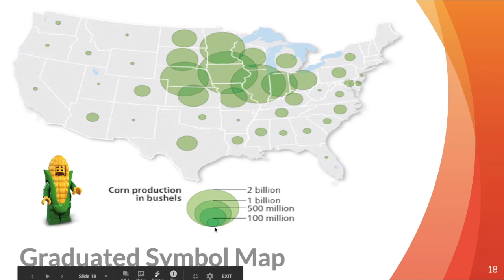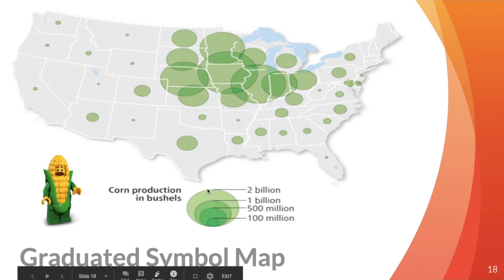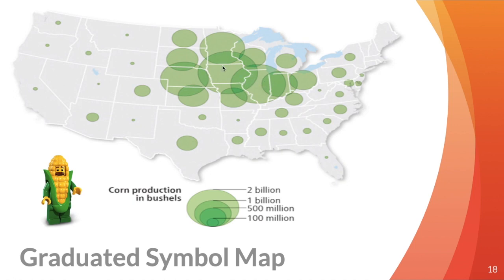The fourth map is called a graduated symbol map. It takes a symbol — it doesn't have to be a circle — and shows how that symbol is graduated, or enlarged, as corn production increases in that area. Illinois and Iowa have these giant symbols because they've been graduated to that two-billion-bushel marker. A state like Texas is probably somewhere between 100 million and 500 million, so the circle size falls between those two markers. California is very small — under 100 million.